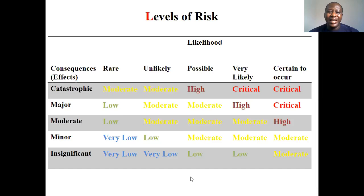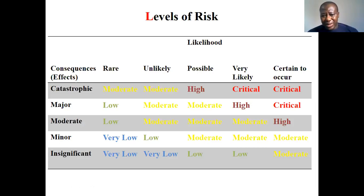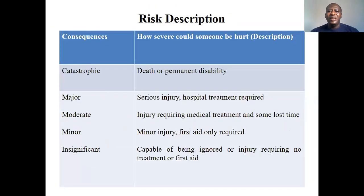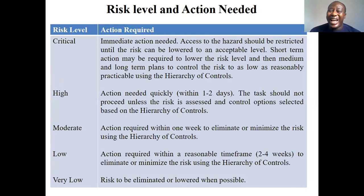These are examples of the risk levels and metrics an organization can use. An organization going through the risk assessment process should identify all of these — the hazard description, the risk description, the consequences, how the risk could hurt someone, the frequency of occurrence, the risk level, and the actions needed. They should also look at the likelihood of the risk occurring.